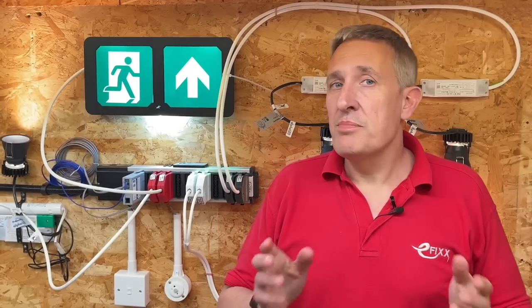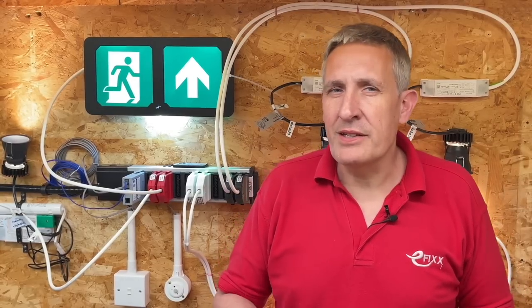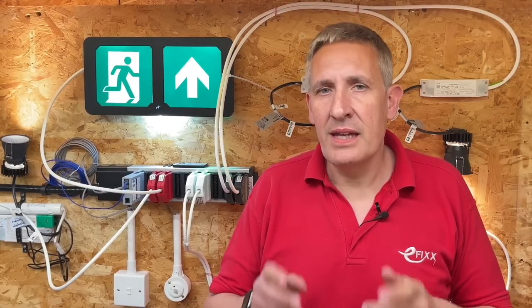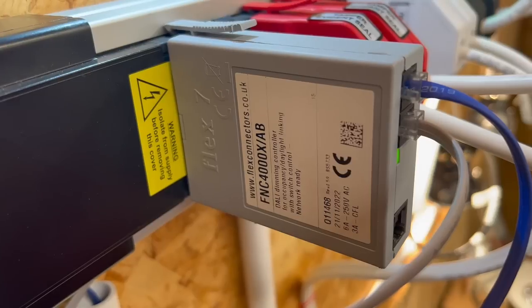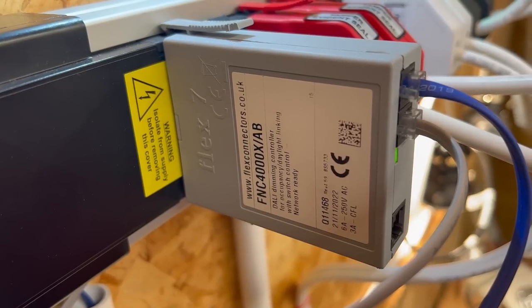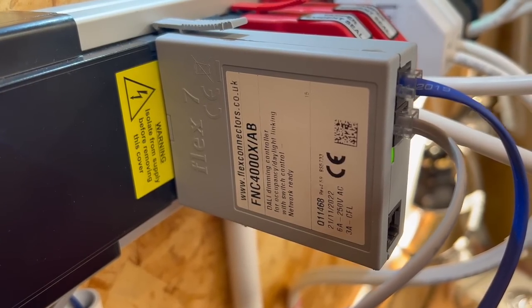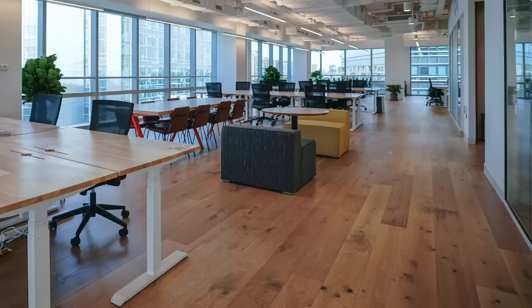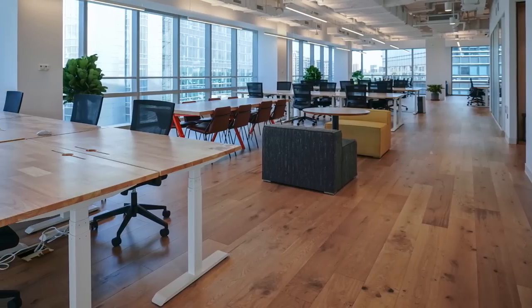Whilst at first this may sound complicated, in reality control devices often combine the functions of application controller, power supply and sensors into a single device. Here's an example from Flex 7, which integrates application control, power and sensors into a single package — and it's been pre-configured for a typical office lighting application.